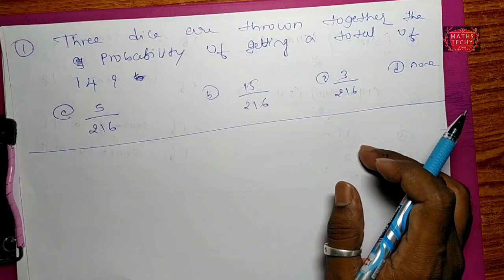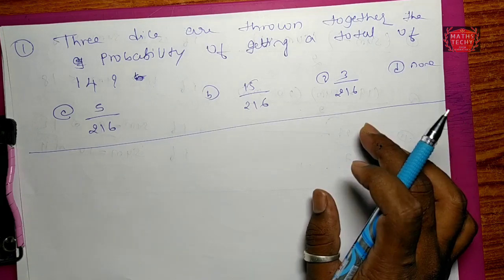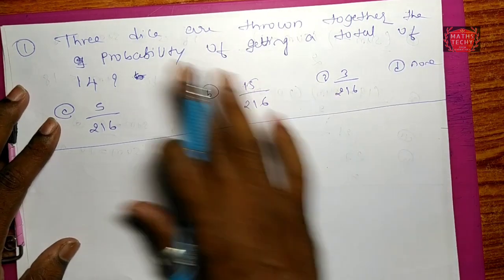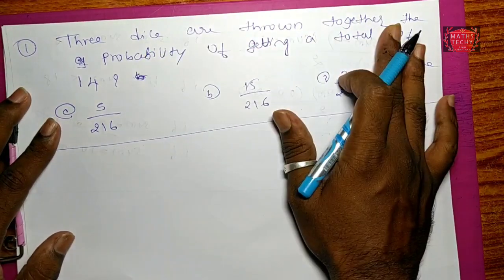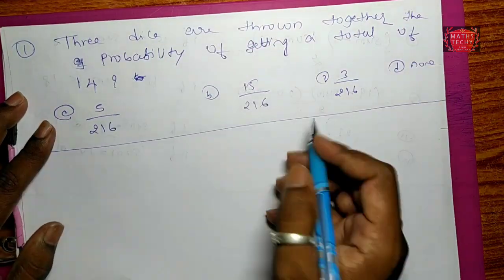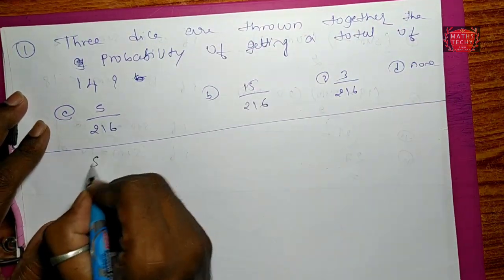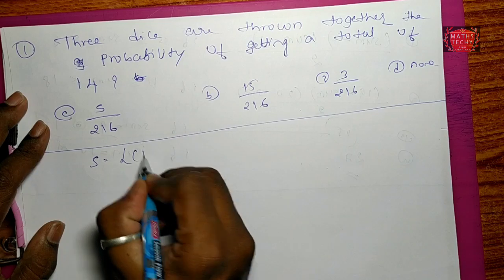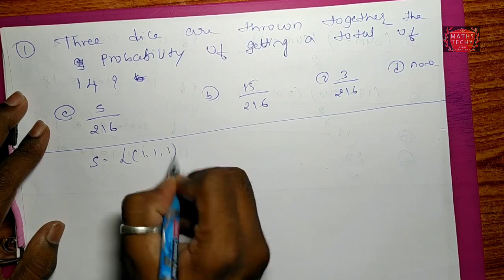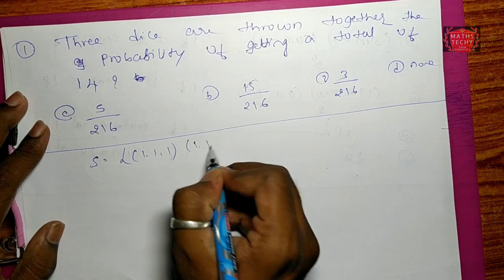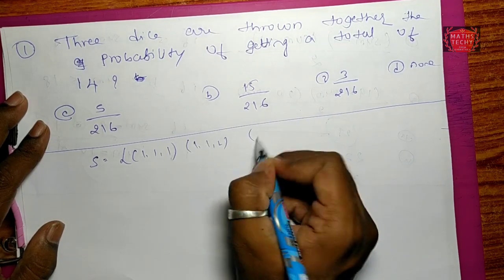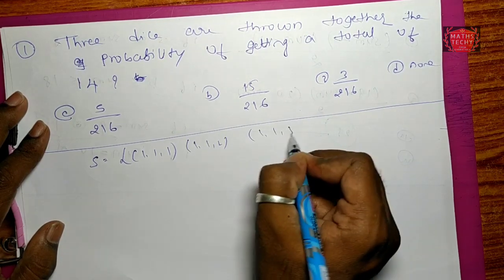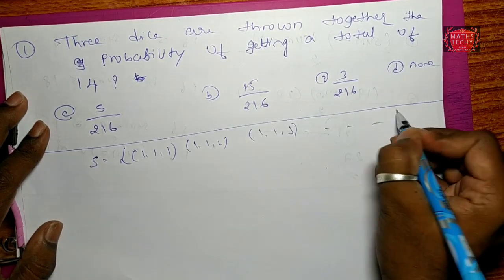So, if you have a problem: three dice are thrown together, and you need to find the sample points. These are the sample points — they can take values like (1,1,1), (1,1,2), (1,1,3), and continue on.